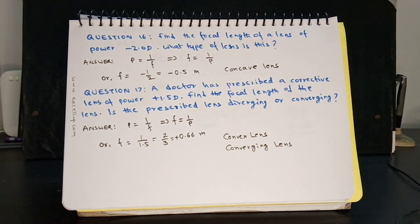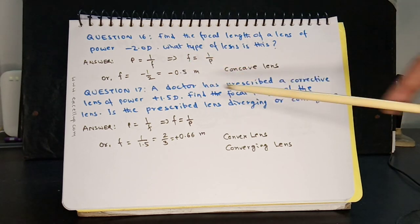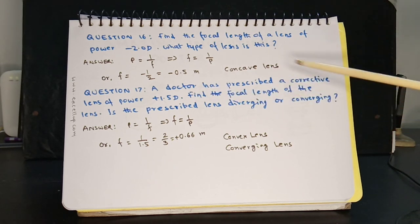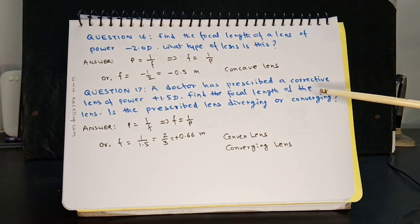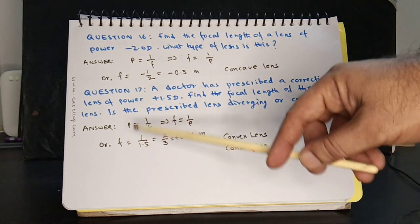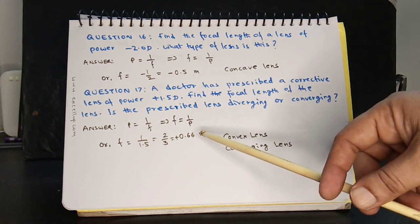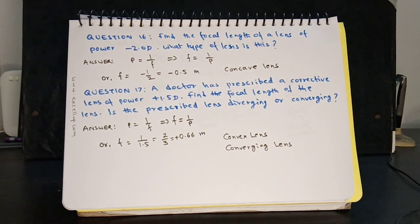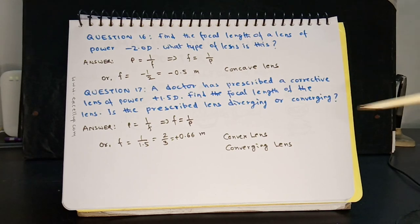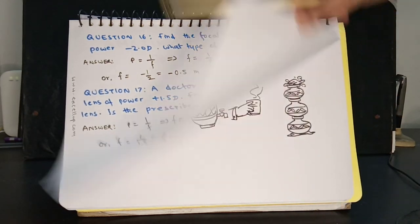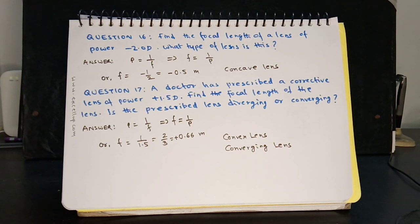Question 17: A doctor has prescribed a corrective lens of power +1.5 D. Find the focal length of the lens. Is the prescribed lens diverging or converging? Using the same formula, f = +0.66 meters. The positive sign shows it is a convex lens, and a convex lens is a converging lens.